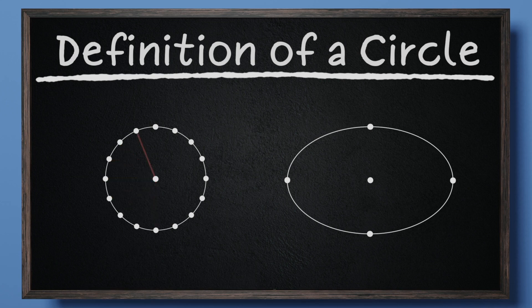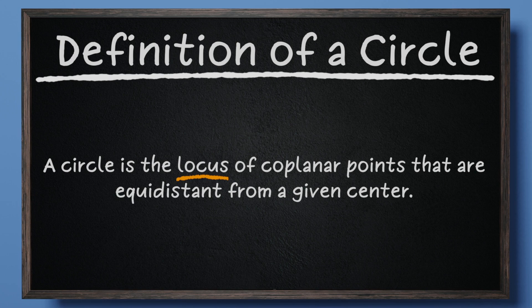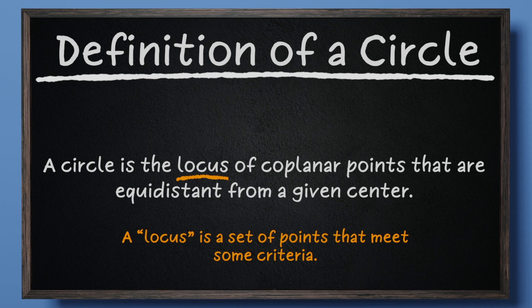Which brings us to our last vocabulary word, locus. A locus is simply a collection, or set, of points that meet some criteria. We will revisit the definition of locus in the next lesson for a more mathematical definition.